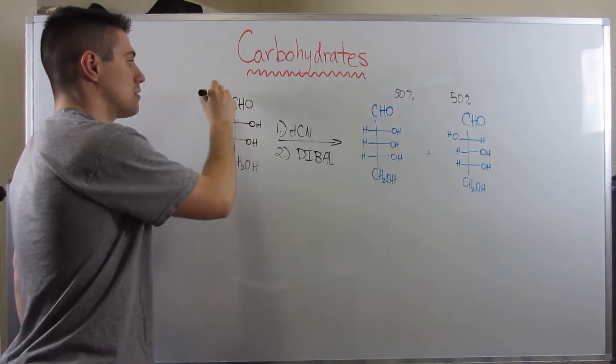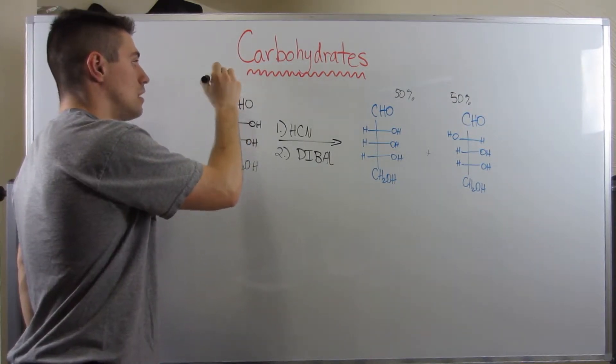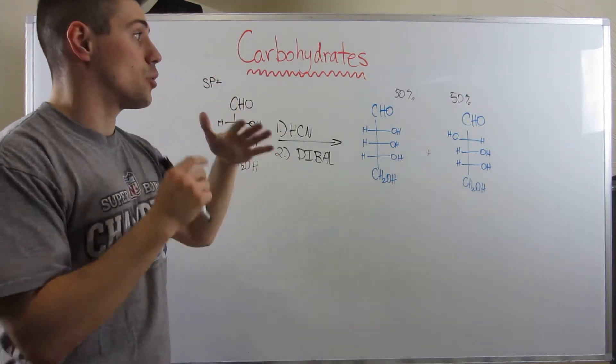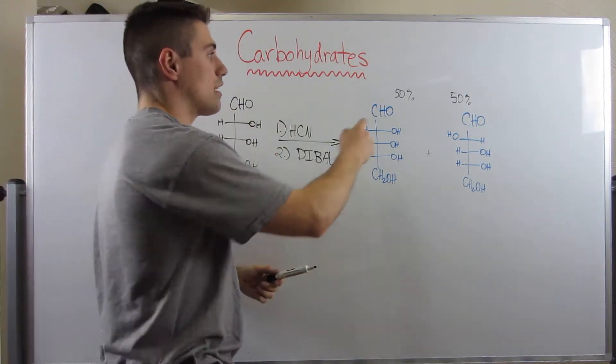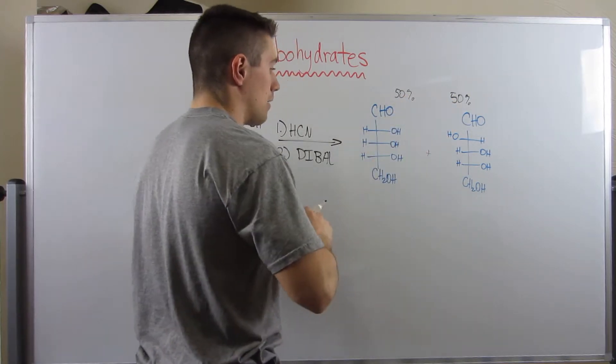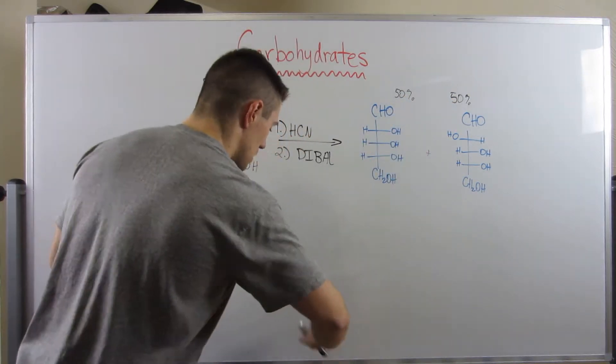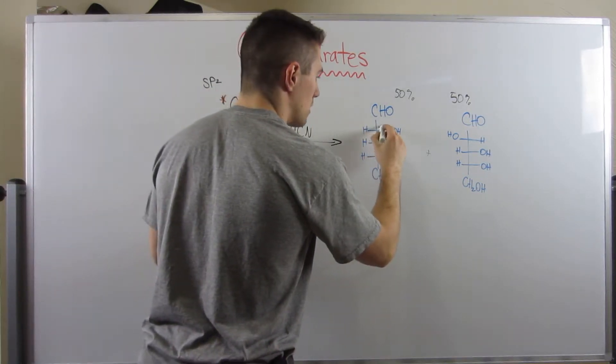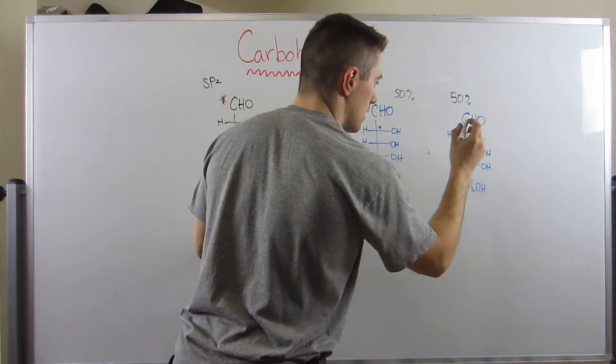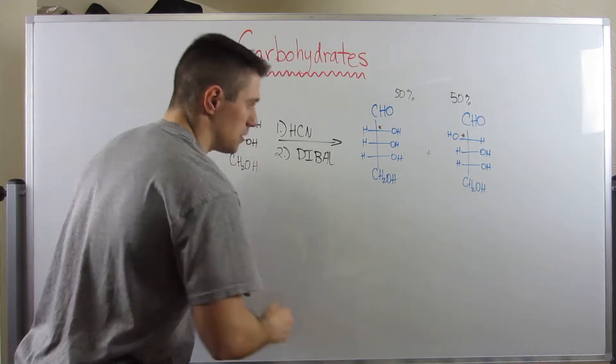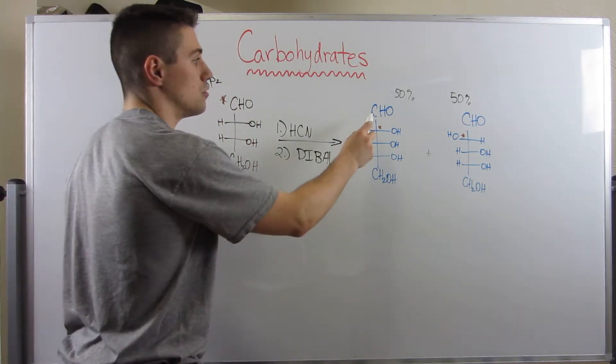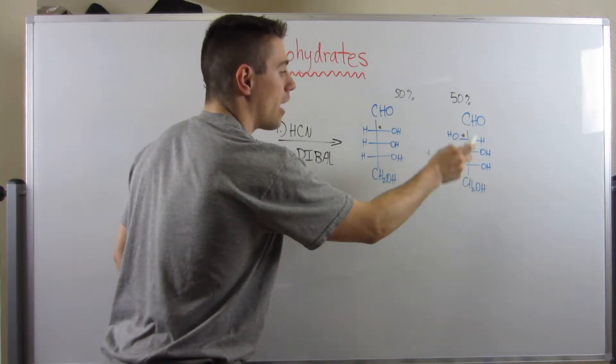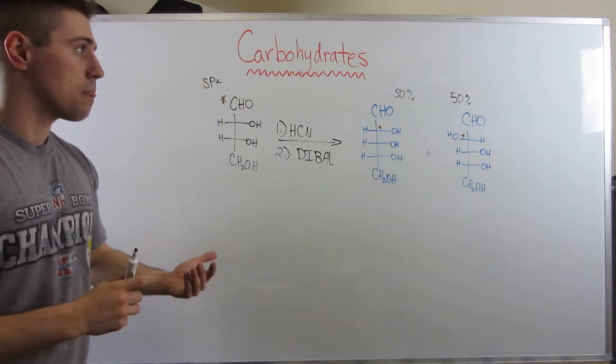But remember, since this guy's trigonal planar, he's sp2 hybridized, I told you that attack happens on top and on bottom. So theoretically we're going to get a 50-50 mixture. Let me kind of do a little, this carbon right here is this carbon in these Fischer projections, because we go from having one, two, three, four carbons to one, two, three, four, five. We lengthen our chain by one.